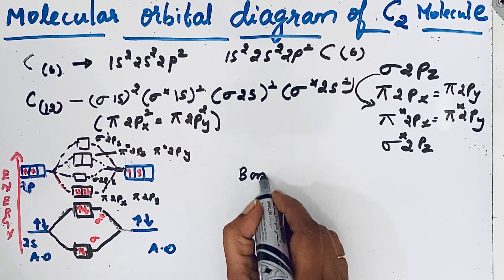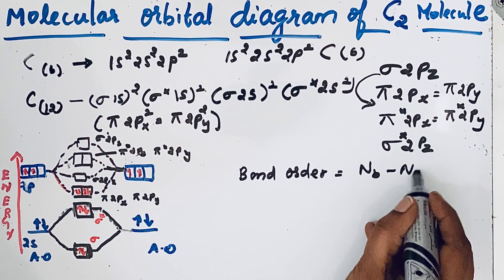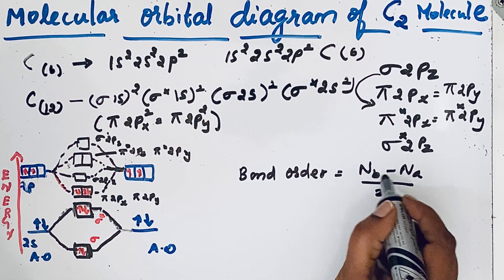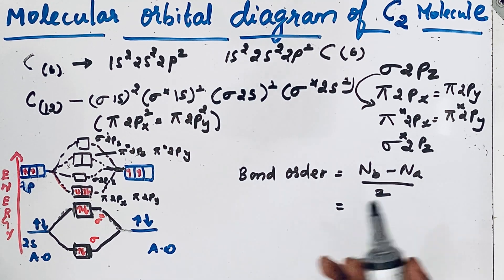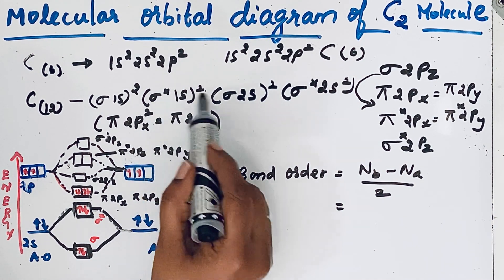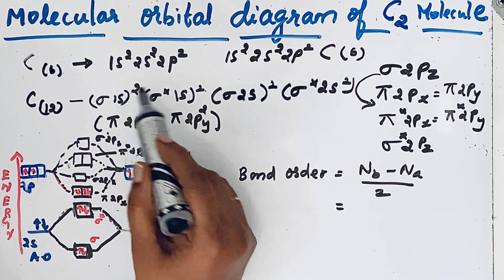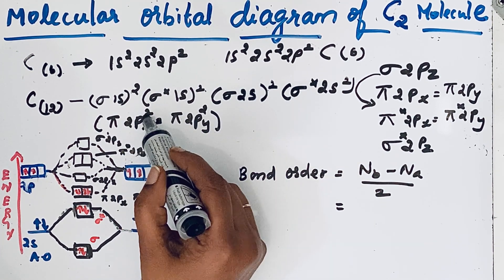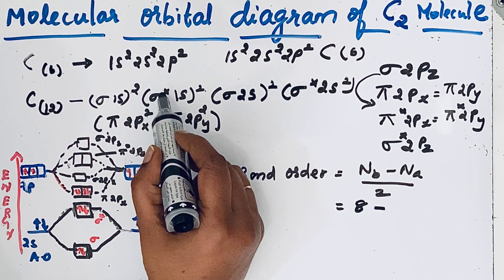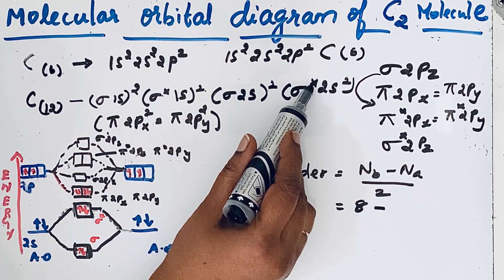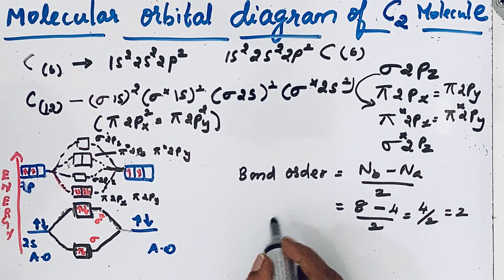The bond order formula is: (number of bonding electrons minus number of anti-bonding electrons) divided by 2. Counting bonding electrons — wherever there is no star, those are bonding: 2, 4, 6, 8 — so 8 bonding electrons. Anti-bonding electrons: 2 plus 2 equals 4. So bond order equals (8 minus 4) divided by 2, which equals 2 — a double bond.